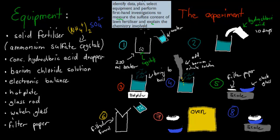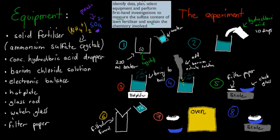We have to measure the sulfate content and explain the chemistry involved. The equipment includes: concentrated hydrochloric acid in a dropper bottle, barium chloride solution, an electronic balance, a hot plate, a glass rod to stir with, a watch glass, and filter paper.